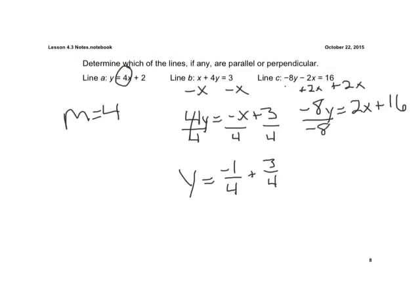Divide by our negative 8 to everything. So those are gone. Y equals 2 over negative 8. We can simplify that to a negative 1/4 X minus 2. 16 divided by 8 is 2.